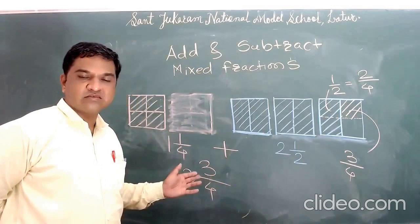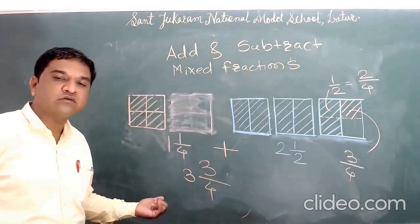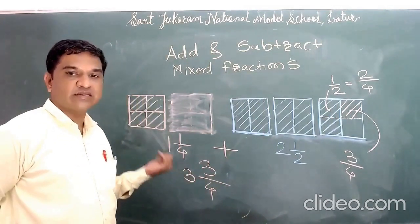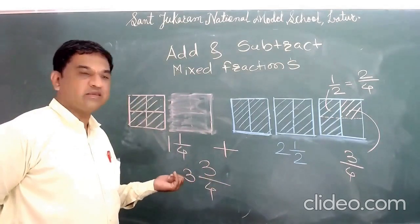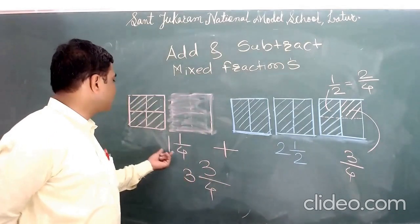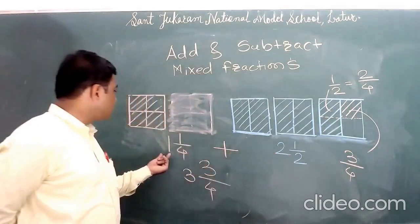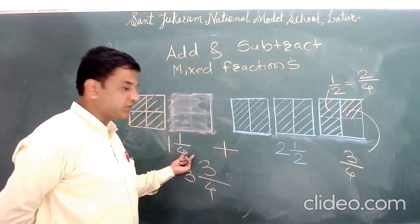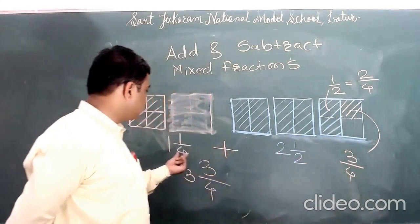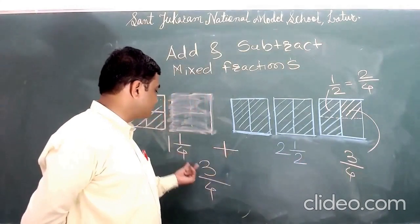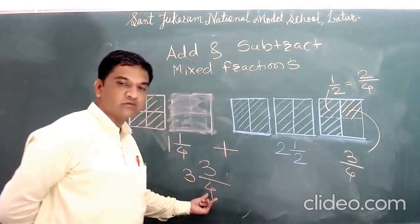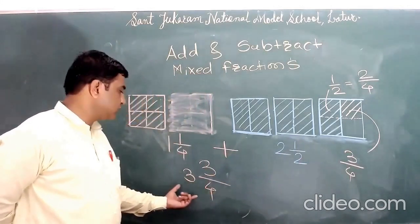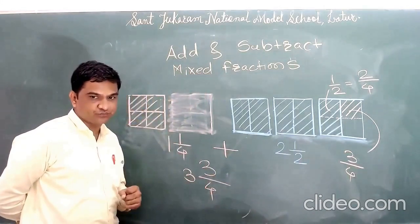So this is very easy — the addition of mixed fractions using the graphical method, in which we add the whole parts of the fractions first and then add the fraction parts separately, and we get the result as a mixed fraction.